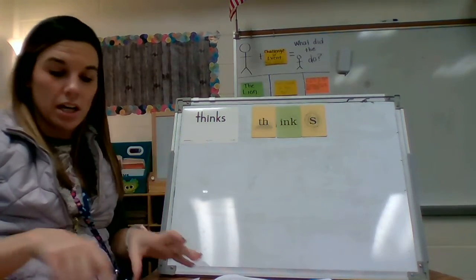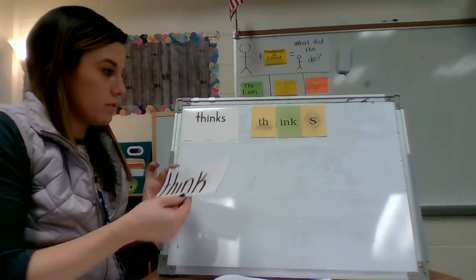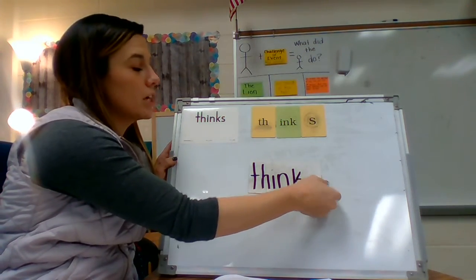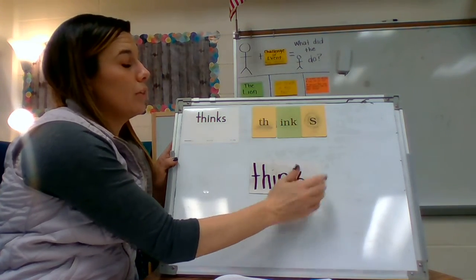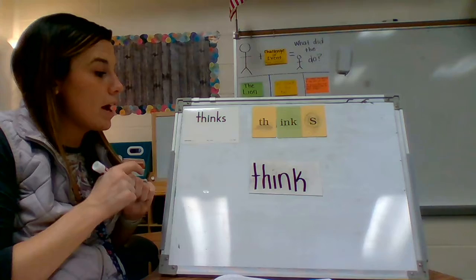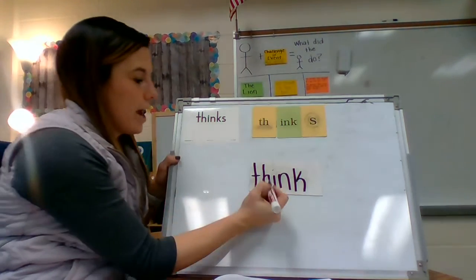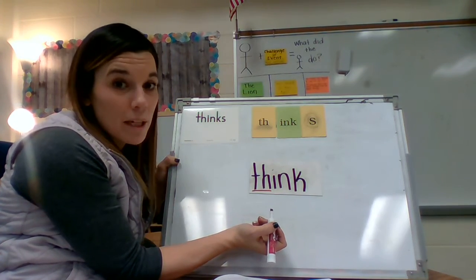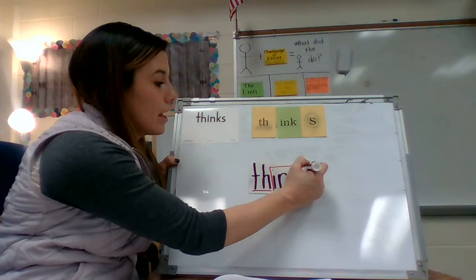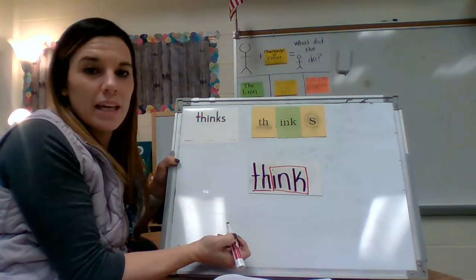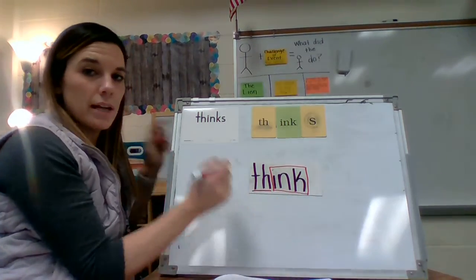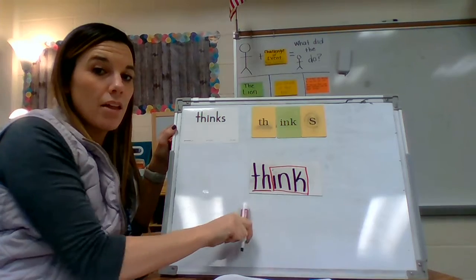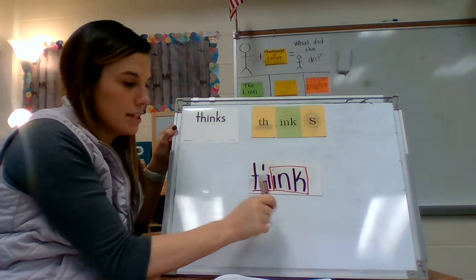I have the word on a dry erase card that I can mark up. I'm starting with the base word without the suffix S. The first thing you have to do is underline the digraph — TH. Then I'm going to put a box around my glued sound pattern, I-N-K. What does I-N-K make? 'Ink.' Now let's look at this word without the suffix S: TH, ink — 'think.' This is our base word.